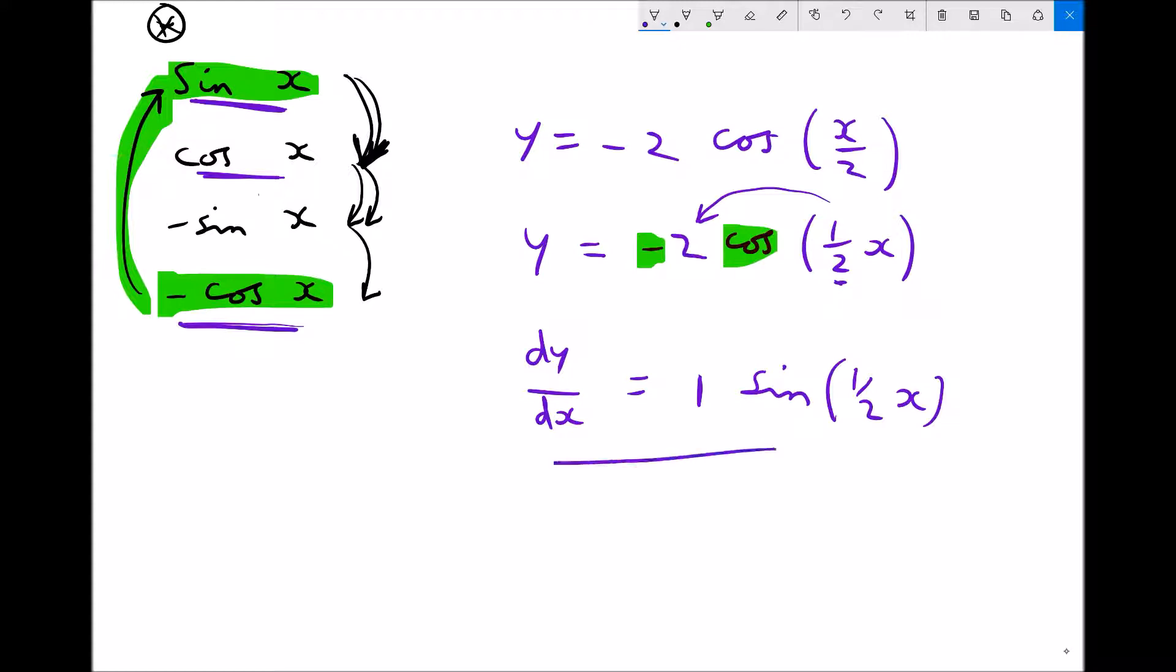So we're going to review the same expression. We've got y equals minus 2 cos a half x. Remember that cos differentiates to minus sine from our table. So instead of timesing a half by 2, I can times a half by minus 2. And a half times minus 2 is minus 1. So we'll get dy/dx equals minus 1.